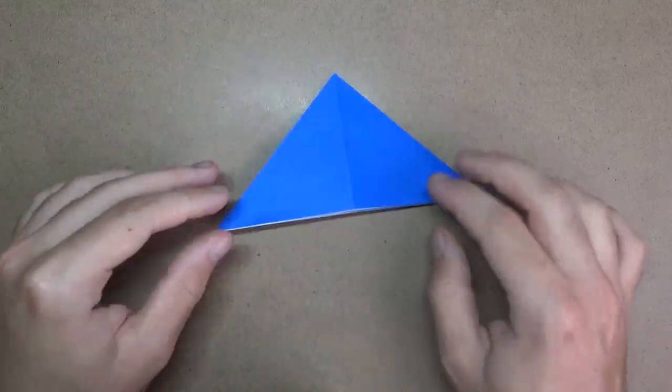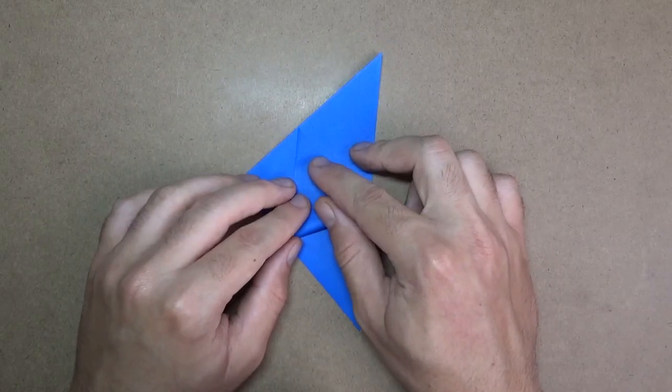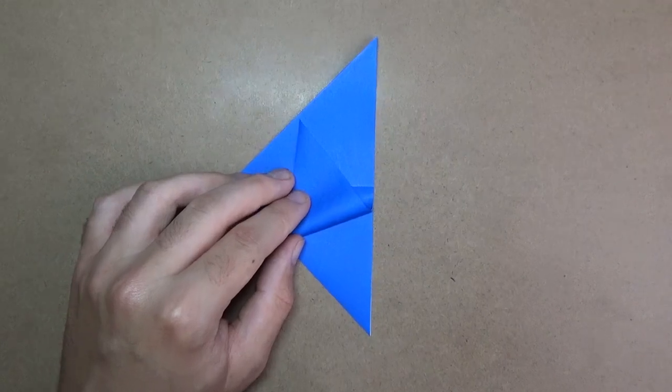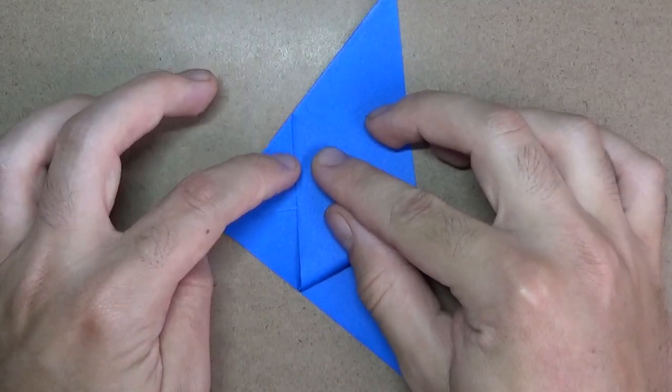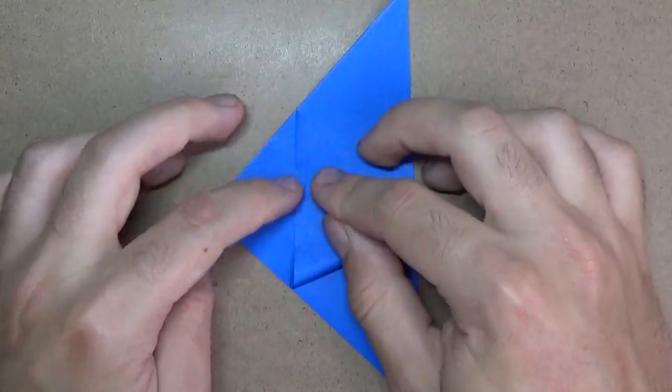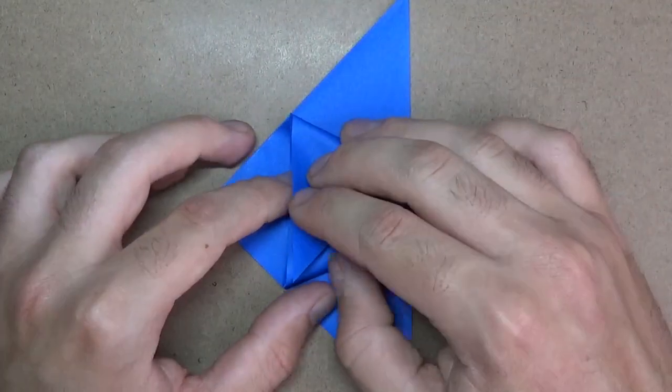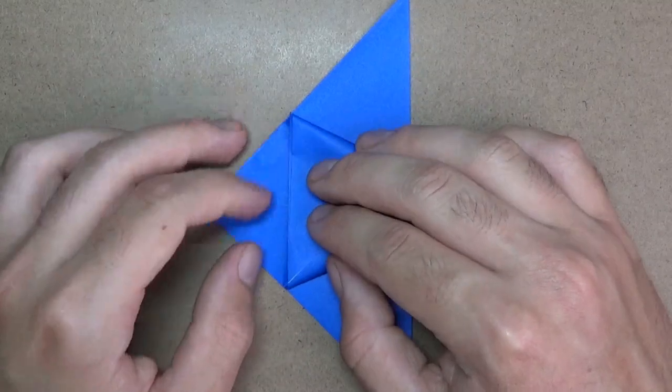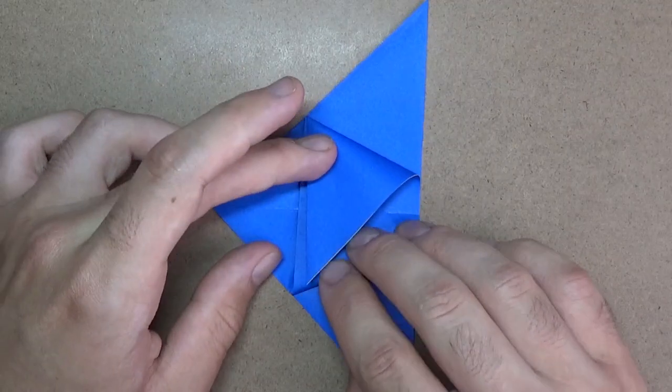Okay. So there's the water bomb base. All right. And now, this is the hardest step of the whole model. But here's what we're going to do. So we're going to fold this up. And this needs to be parallel with this edge. And to check yourself, you can take this flap and fold it. And this is hard because you kind of have to fiddle with the folds to get them to align, right?